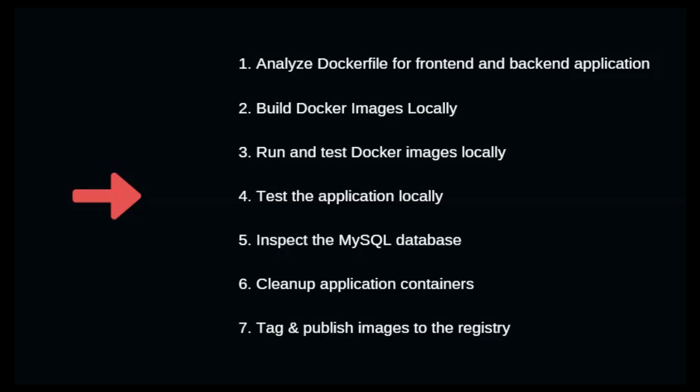In this workflow, the first thing to do is analyze the Dockerfiles for both the front-end and backend application. We will build the Docker images locally, then run and test these images by building Docker containers on top of them. Running the image does not mean the application is stable, so we will test functionality, inspect the MySQL database, check whether the database is created, whether we have the records. Then once all these steps are successful, we will clean up the containers and tag them with version numbers, then publish the images to a registry.